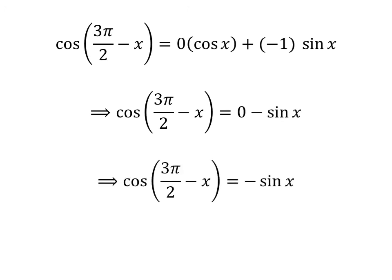As 0 times cosine of x is equal to 0, and minus 1 times sine of x is equal to minus sine of x. So, cosine of 3 times pi upon 2 minus x is equal to 0 plus minus sine of x, which is equal to minus sine of x. Therefore, the value of cosine of 3 times pi upon 2 minus x is equal to minus sine of x.